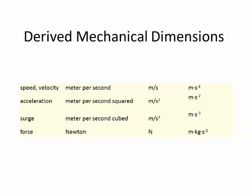These are the derived mechanical dimensions and units. We have velocity in meters per second, acceleration in meters per second squared, surge in meters per second cubed, and finally force in Newtons. Notice how these units are just higher derivatives of space with respect to time. These units are very similar in that they just take one derivative of the previous one — much more homogeneous and similar than is the case with the electrical derived units.